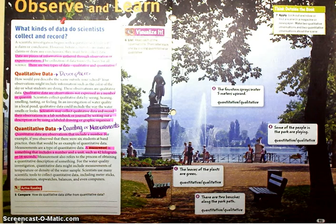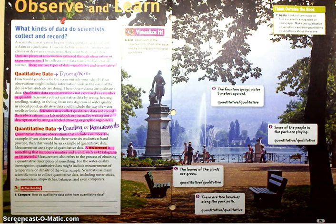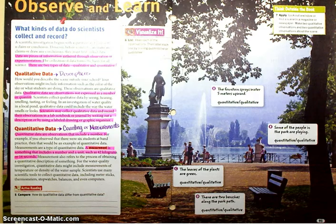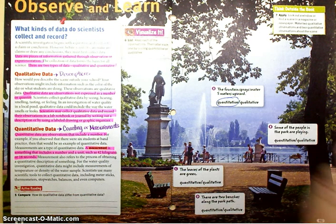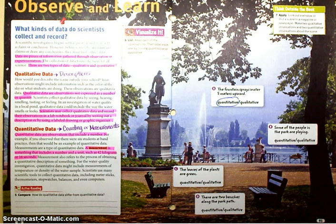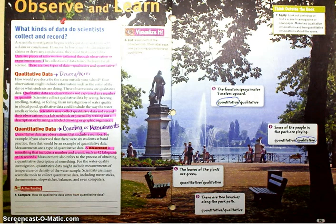Let's go to page 91 and do a couple of examples — this is actually doing number 7 with you. It says look out the window and make two qualitative observations and two quantitative observations about the scene. Observation A: the fountain sprays water 5 meters upward. Is that quantitative or qualitative? It's quantitative — did it include a number? Yes. Observation B: some of the people in the park are playing — that's qualitative, because that's just a description of what's going on. There are no numbers involved with that statement.